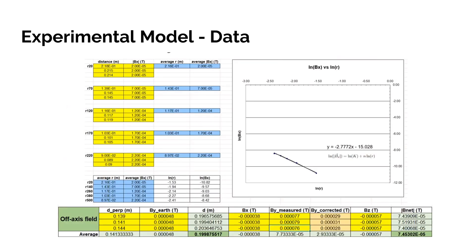Once we calibrate our data collection method and carry out our procedure, we are left with our data seen here. We can see that the magnitude of the magnetic field increases as the distance between the magnet and the meter decreases. The values of the line of regression can be used in the equation B̄ = k·r^n to determine the magnetic dipole moment, by setting k·r^n equal to (μ₀/4π) times 2m/r³. Please note that the off-axis magnetic field measurements are in the bottom left.